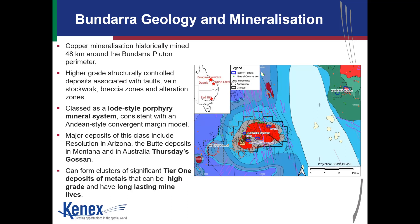The mineralisation is structurally controlled within the hornfels and the intrusion, consisting of veins, stockworks, breccia zones and alteration zones. It can be classified as a lode-style porphyry mineral system, but is still consistent with an Andean-style convergent model. Major analogous deposits include Resolution in Arizona and Butte in Montana, and Stavely are drilling one at Thursday's Gossan in Victoria at the moment. Importantly, these can form clusters of significant tier-one deposits that can be quite high grade compared to normal porphyry systems, with long mine lives — which is obviously very attractive.